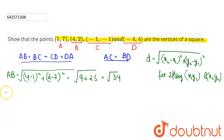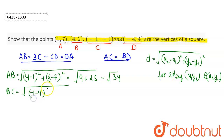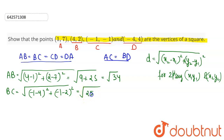Now, the distance between point B and C: BC = √[(−1 − 4)² + (−1 − 2)²] = √[(−5)² + (−3)²] = √[25 + 9] = √34.